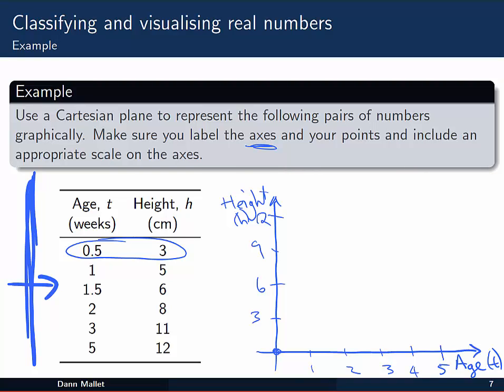So the first one we've got is an age of 0.5, which is around about here, and a height of 3 centimeters. So I'm going to go up here and I'm going to put a point there, that's my first data point. The next one then is an age of 1 and a height of 5. So age of 1 and move up to a height of 5, is probably about there. 1.5 and 6, so up here. 2 and 8, so we can go up to roughly there.